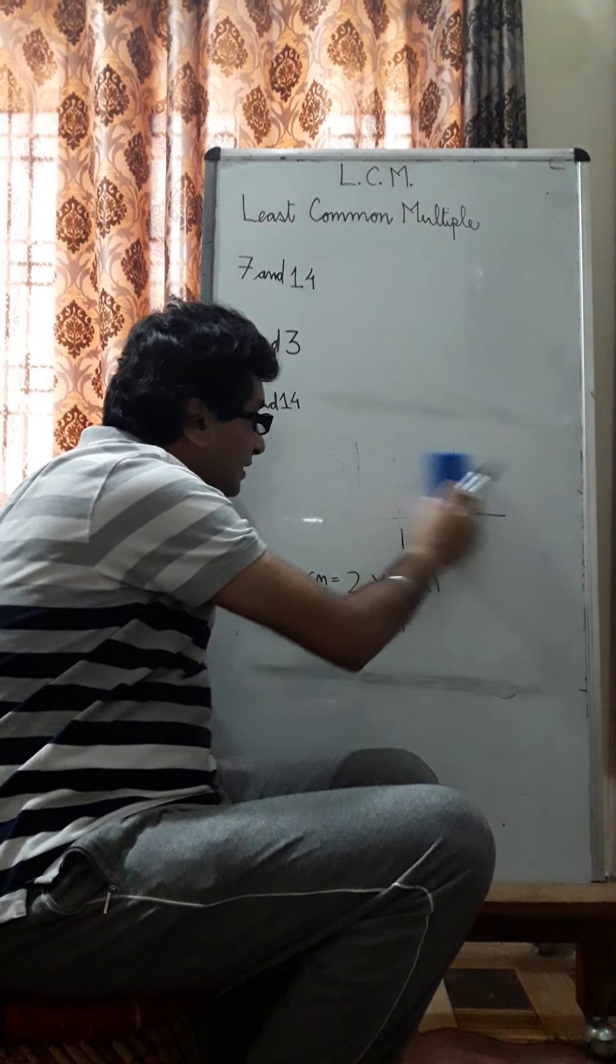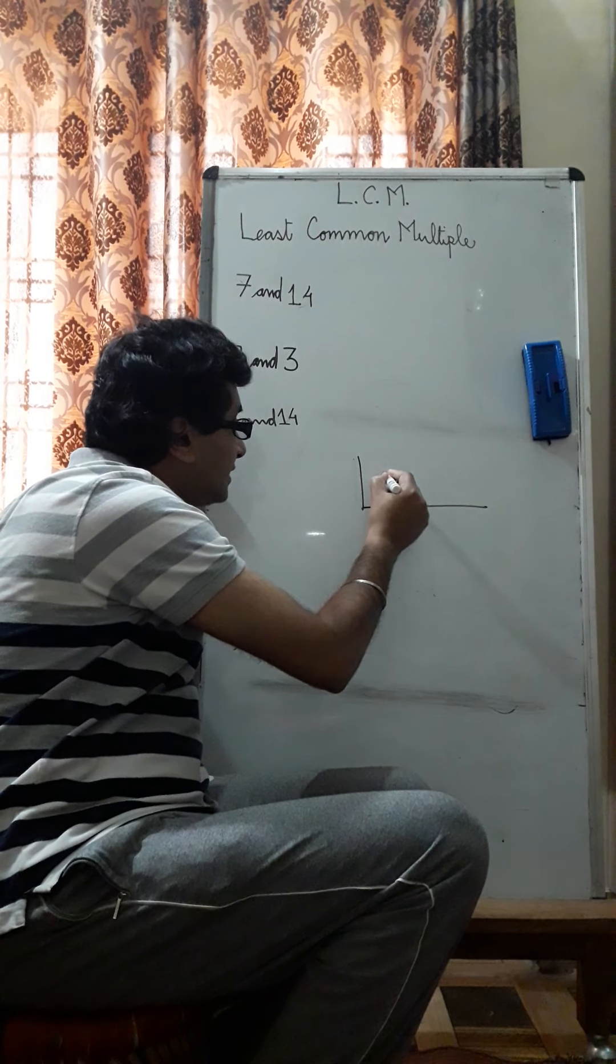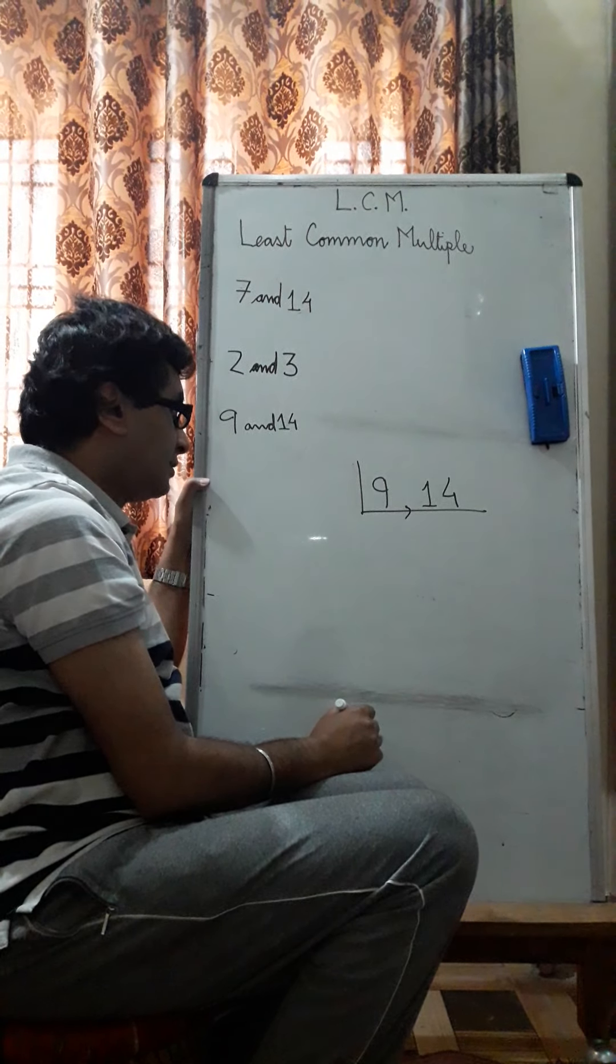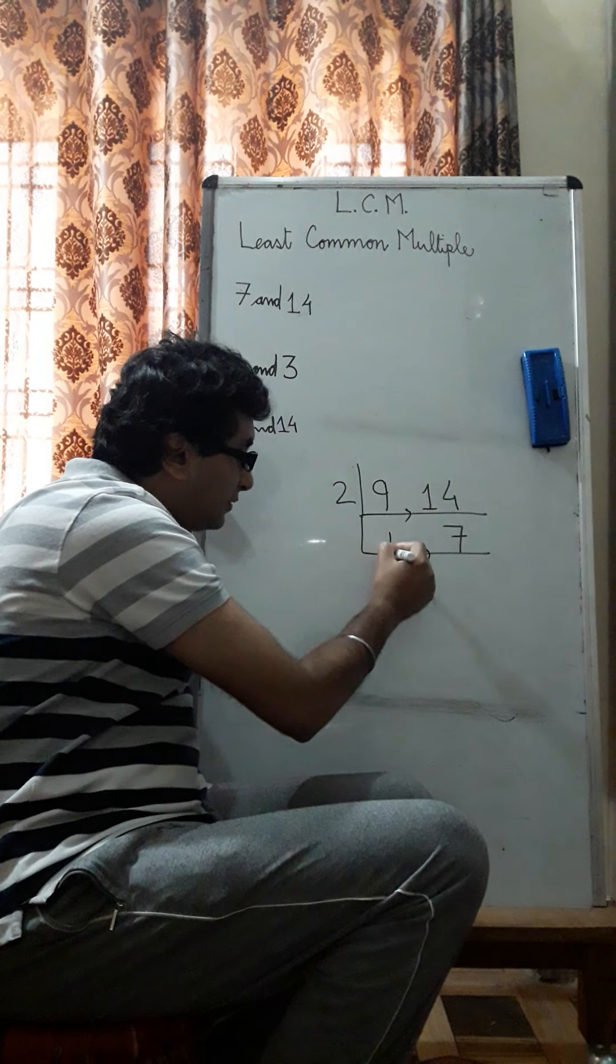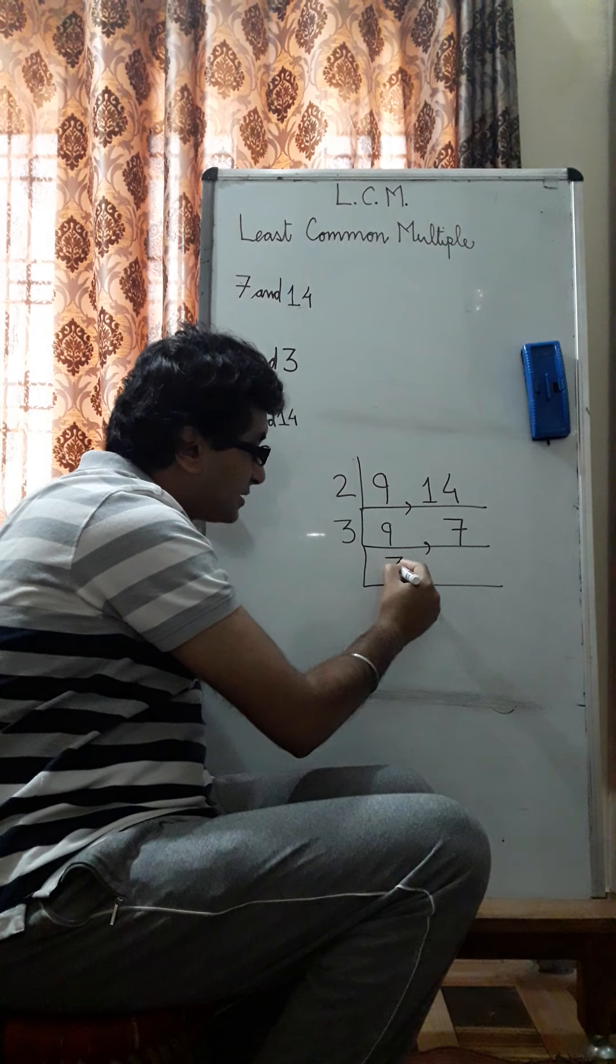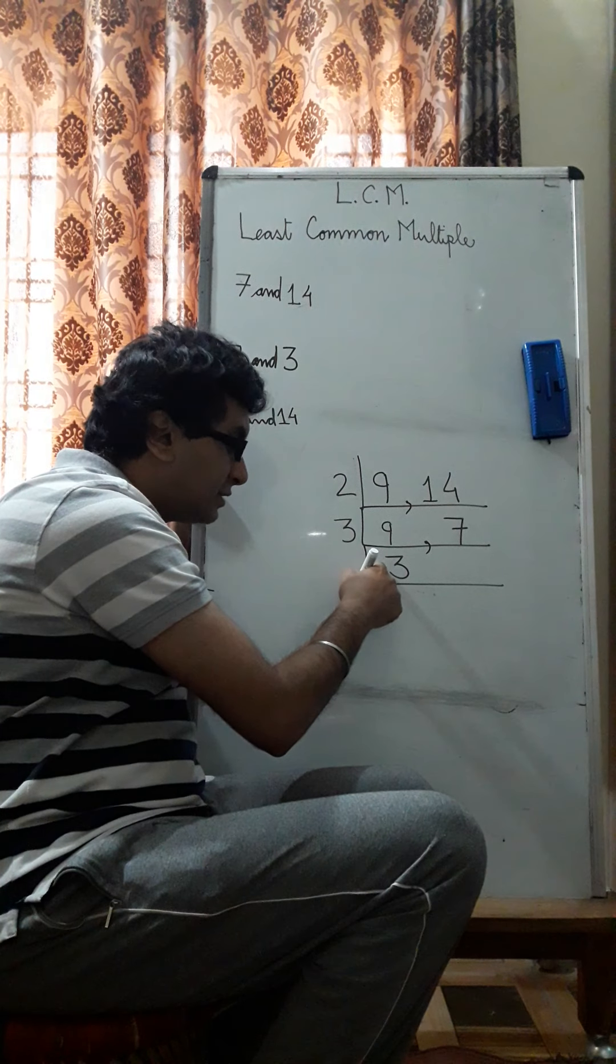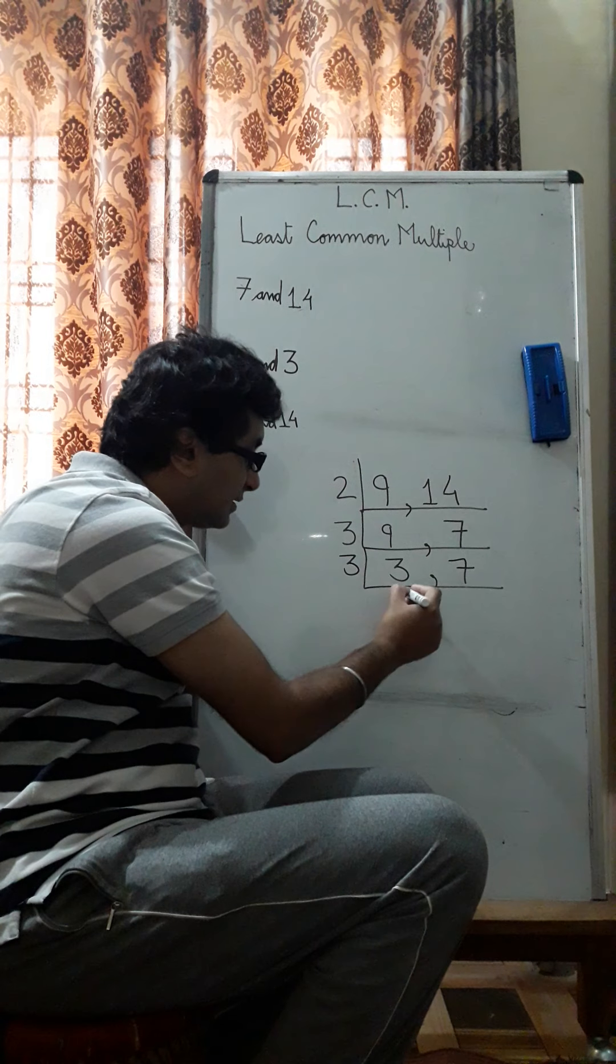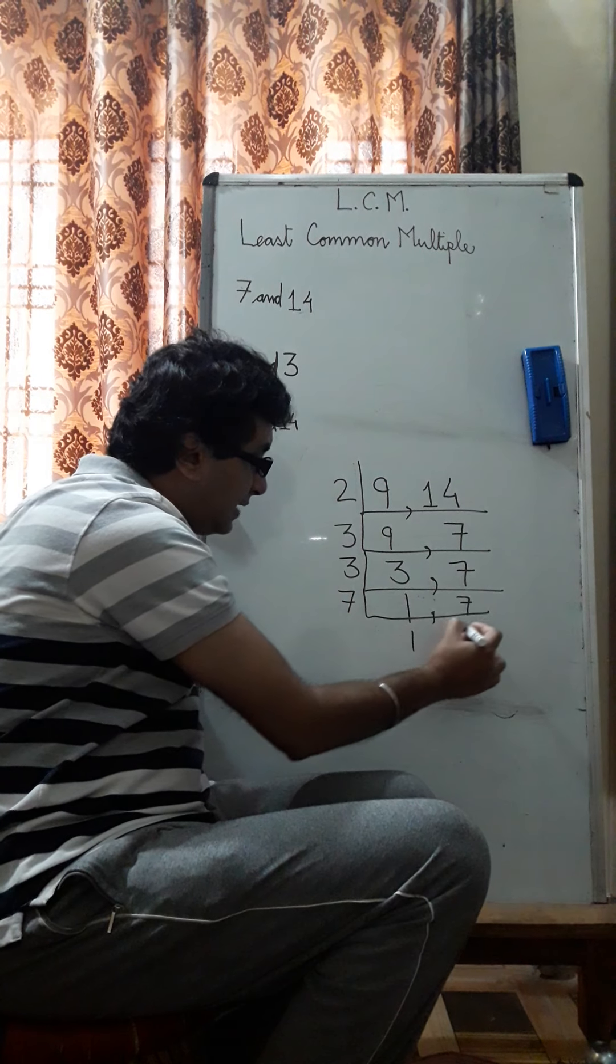Now, the next set of numbers that we have is 9 and 14. So 2 can divide 14. How many times? 7 times. 9 will come down like this. 3 can divide 9. Yes. How many times? 3 times. So I said write the quotient here. And 7 will come here. Still 3 will divide this. One time. 7 will be there. 7. One time. One time.